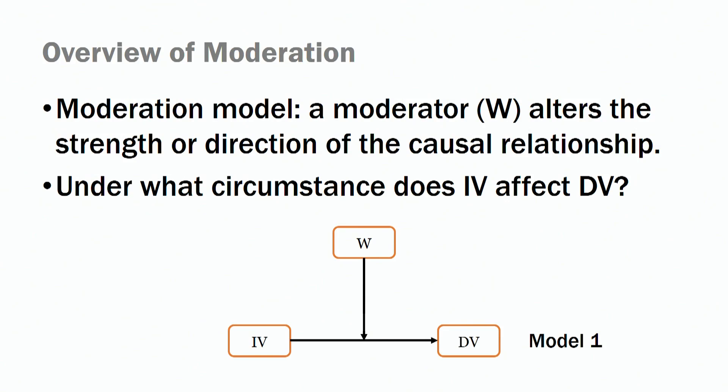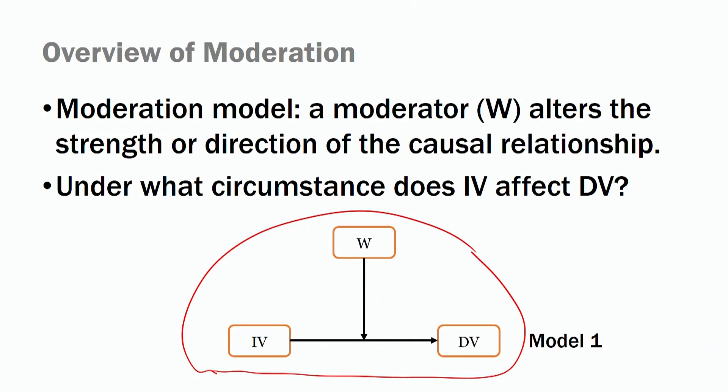If you remember, we are talking about job meaningfulness and job performance. In this case, we are looking at the circumstances in which the independent variable — job meaningfulness — influences job performance. Particularly, we are talking about the effects of job meaningfulness on job performance as a function of organization identification.